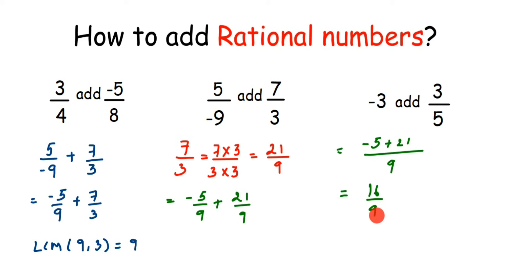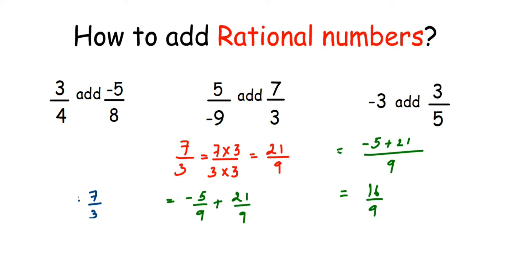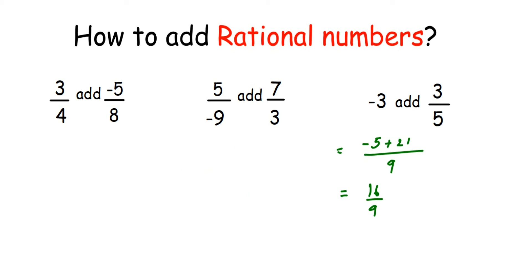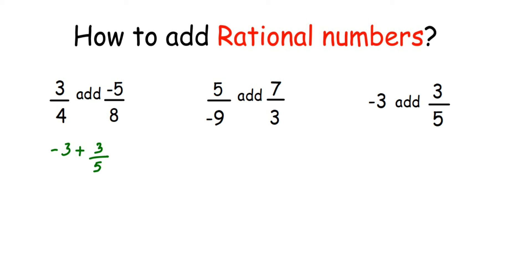Now let's move to the third question. We have minus 3 plus 3 by 5. In the rational numbers chapter we learnt that every integer can be written as a rational number. So minus 3 can be written in rational number form by placing a 1 in the denominator: minus 3 by 1, because minus 3 by 1 equals minus 3. I am just writing it in the form of P by Q.